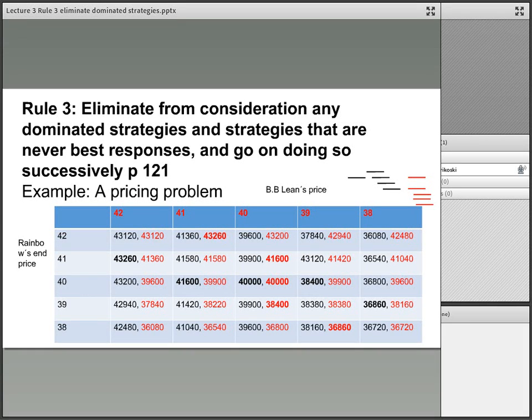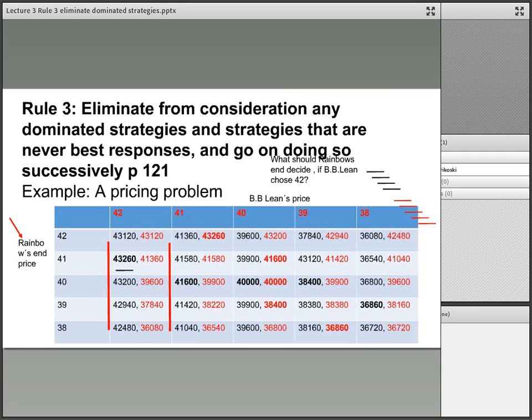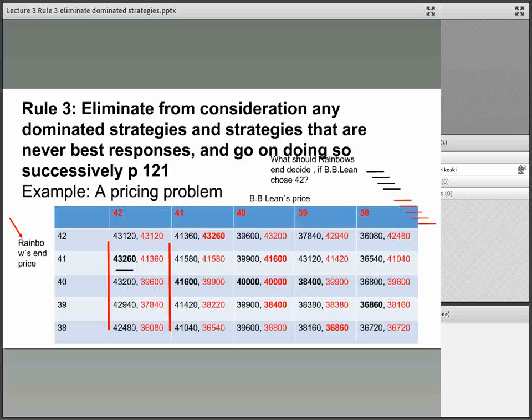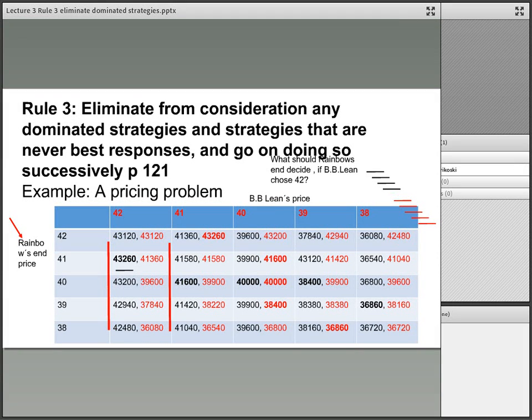So have a look at the first column, the 42 column. Let's imagine that BB Lean has chosen price 42. What is your best option as black? What should you choose? If you go along this column and you look at 43,120, 43,260, and so forth, your best option is the one which has been underlined and which is also in bold, the 43,260.